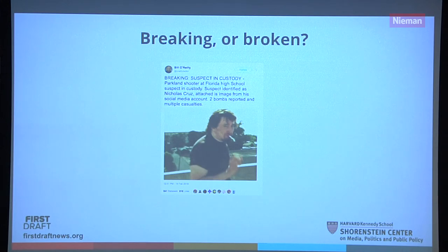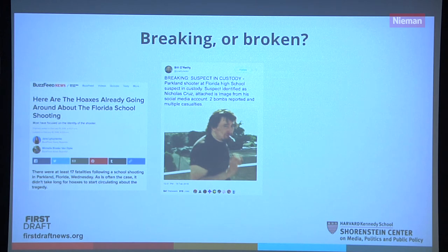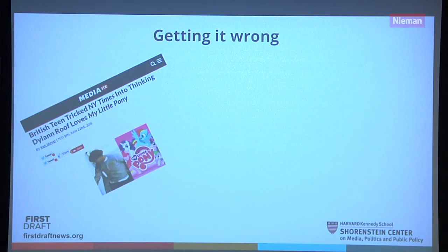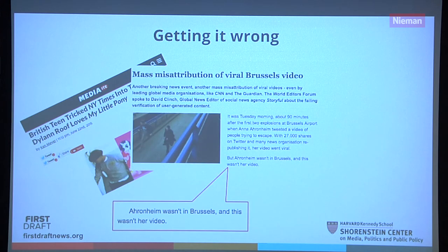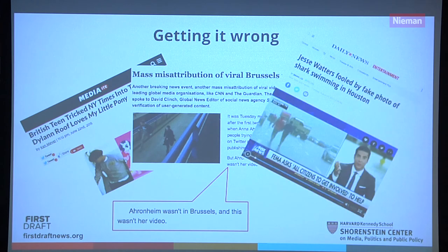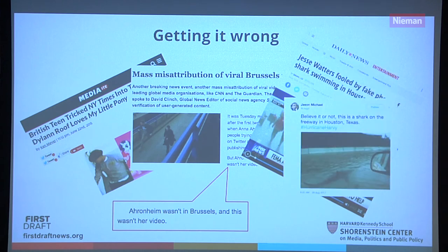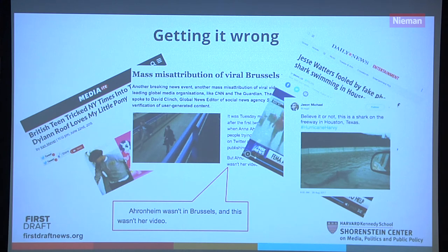You've probably seen some of these hoaxes going around. BuzzFeed is very good at assembling what types of problematic content have been sent out. The problem is when an organization like the New York Times is fooled into thinking Dylann Roof loves My Little Pony, or that a photo received on WhatsApp was credited to Anna Aronheim as her viral video from the Brussels bombing. Fox News also reported on the famous shark that keeps circulating through every hurricane since Hurricane Sandy. After something like the Parkland shooting or a natural disaster involving water, you're going to see the same recirculated content.